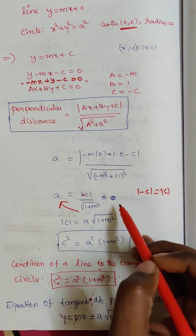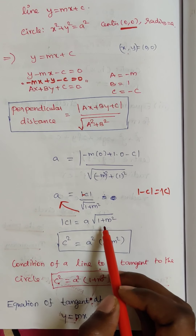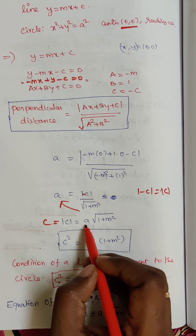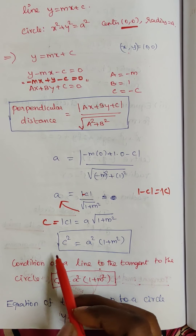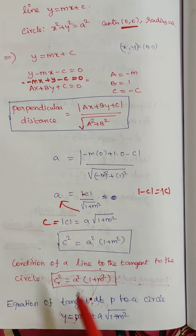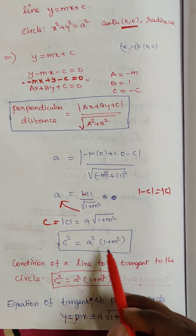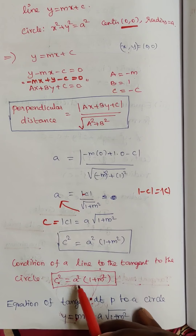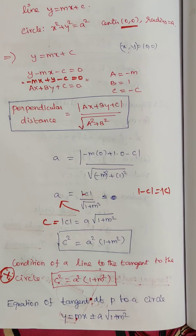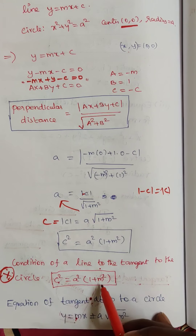Multiplying both sides and squaring, we get c squared equals a squared times (1 plus m squared). This is the condition for a line to be tangent to the circle. The condition is: c squared equals a squared(1 + m squared). This is very important.